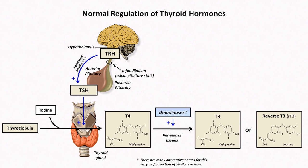If TSH is high, check a free T4 to distinguish hypothyroidism from subclinical hypothyroidism. If it's low, check a free T4 and free T3 — if the free T3 is elevated, it's consistent with hyperthyroidism; if it's normal, the patient likely has subclinical hyperthyroidism. If there is high suspicion for hypothyroidism, check a TSH and free T4. And if there is high suspicion for hyperthyroidism, check a TSH, free T4, and free T3.